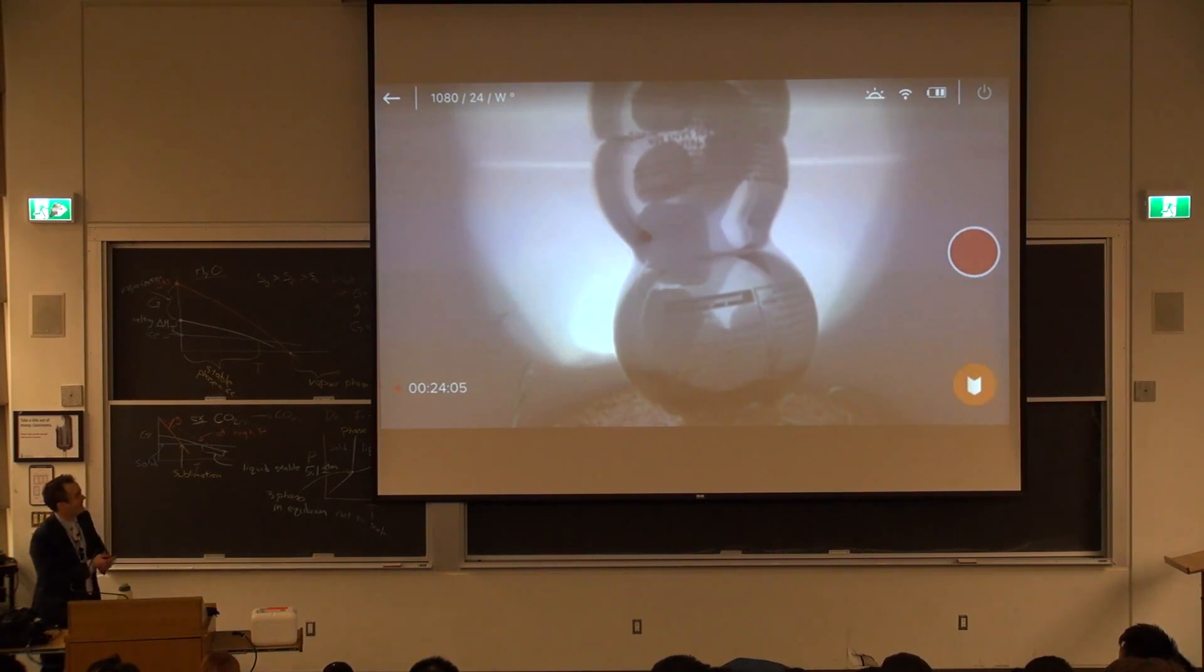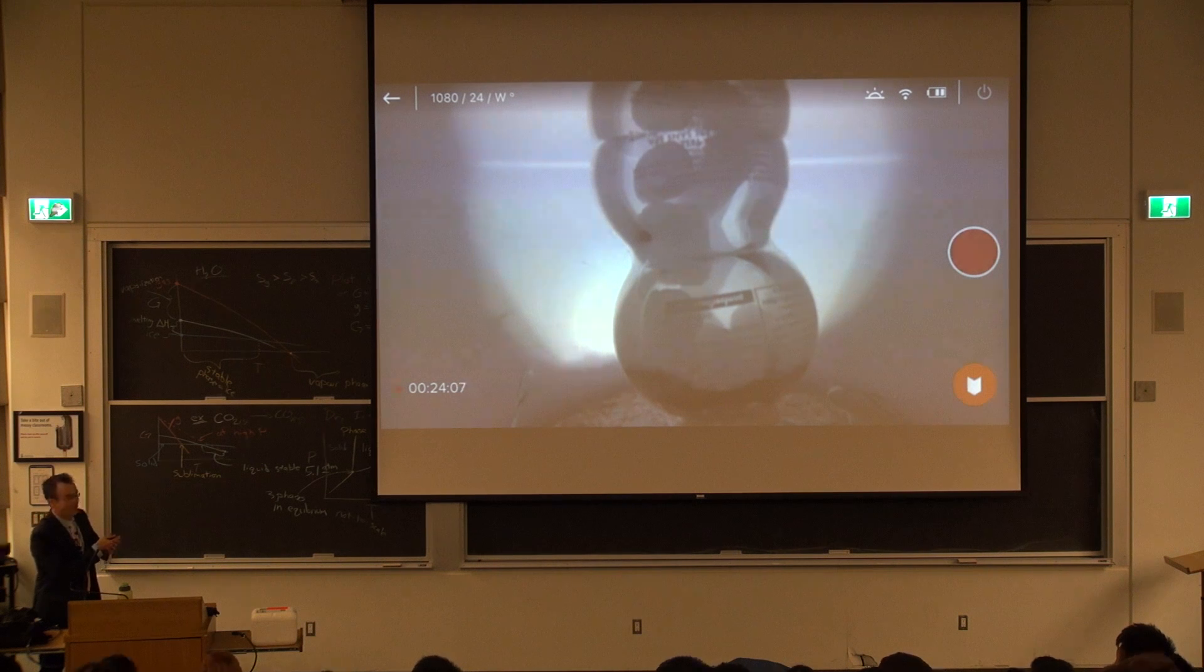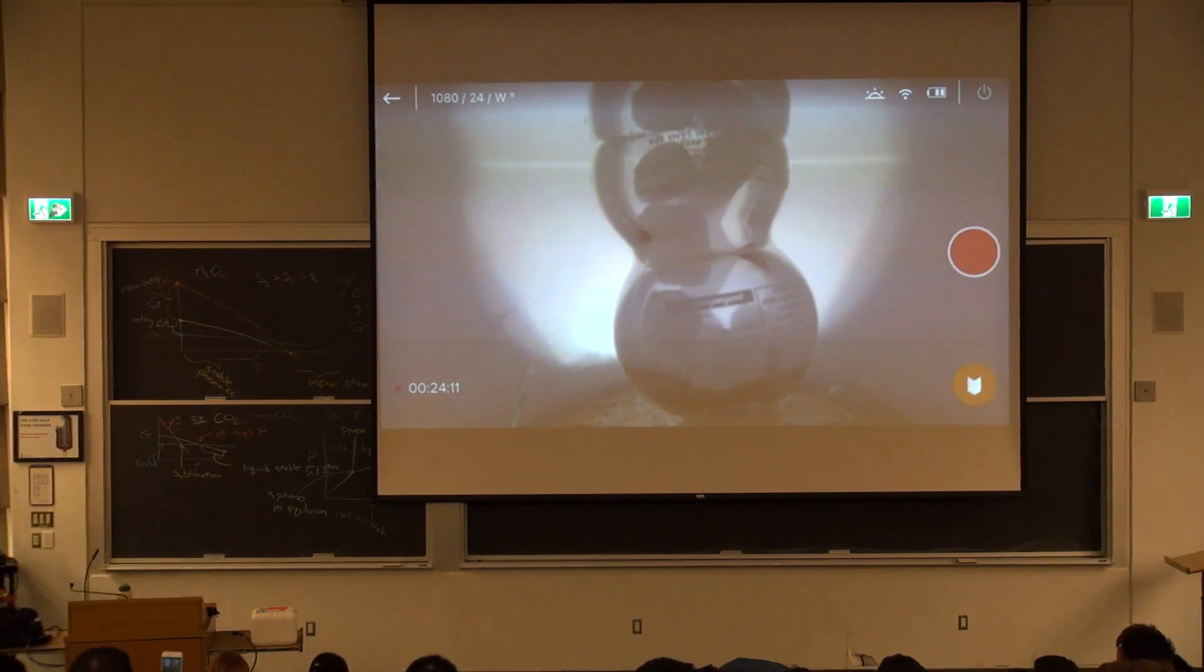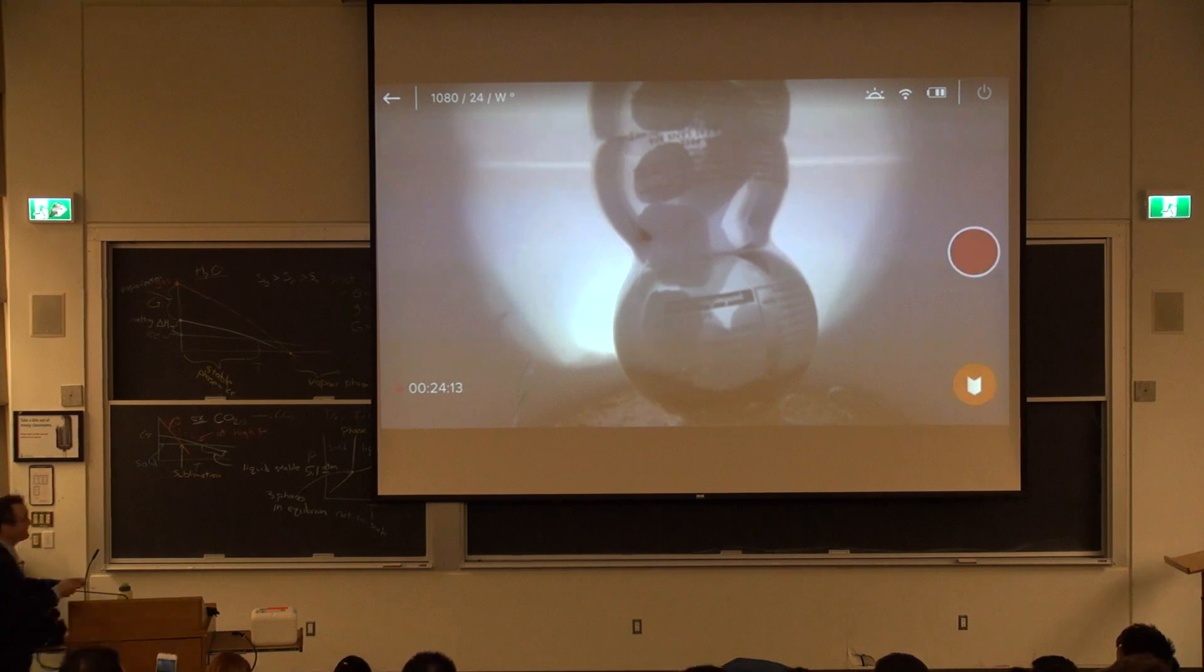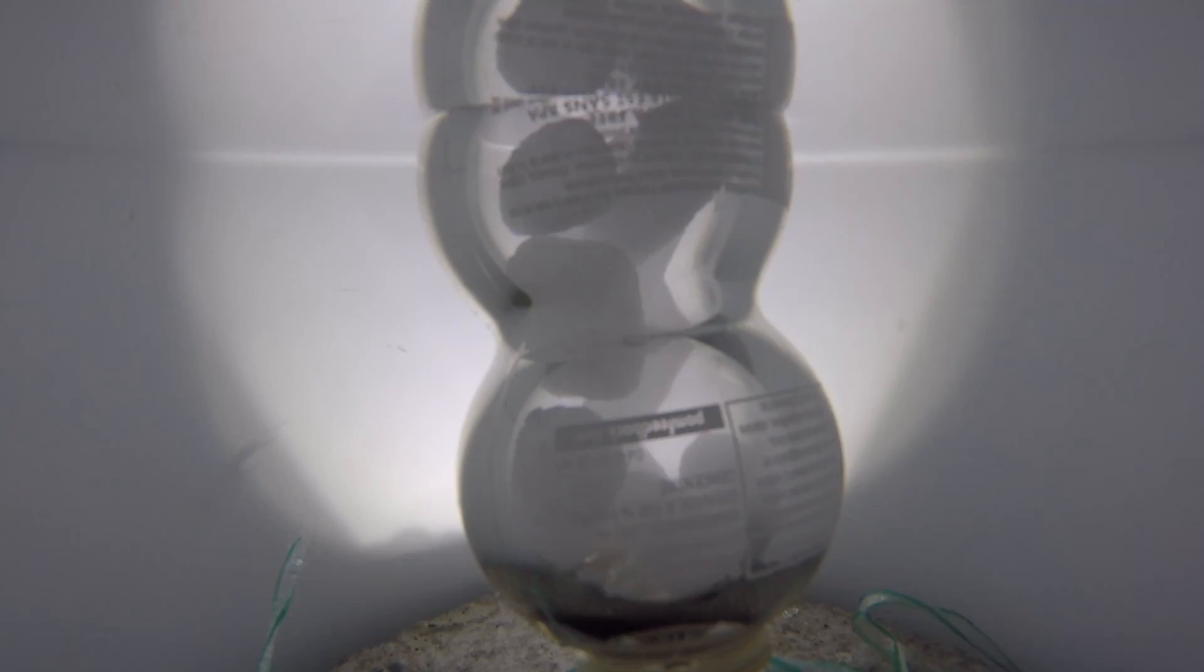Yeah? So, our little indicator of the pressure is the shape of this bottle. Sorry, I'm right in your way. Okay? So, you know, we can see the shape of the bottle there is kind of indicating what the pressure is. And look, you can see these nice little solid pieces of carbon dioxide in there, right? Okay? So right now, what's happening?